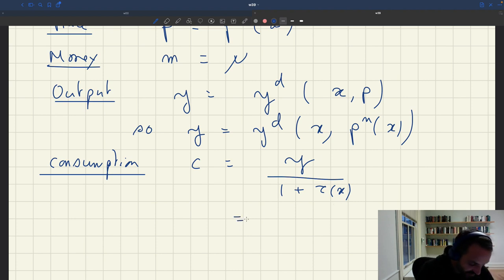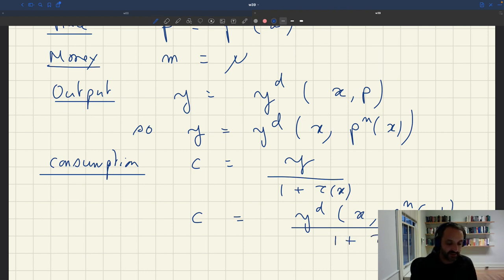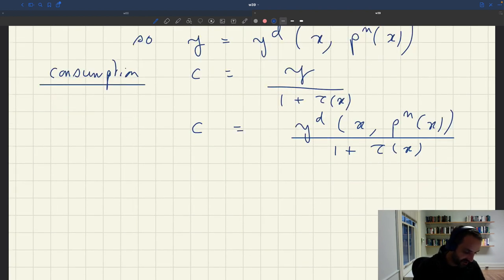But of course, we've just seen that output is determined by tightness. So we can rewrite consumption as a function of tightness only. So it's going to be y^d(x, p^n(x)) divided by 1 plus τ(x). So numerator and denominator are only a function of tightness, so I can then get my consumption.